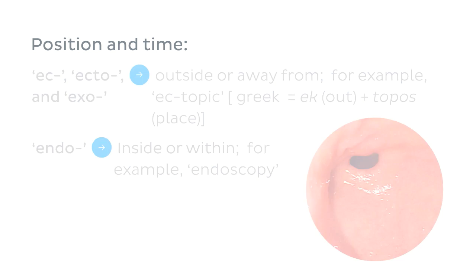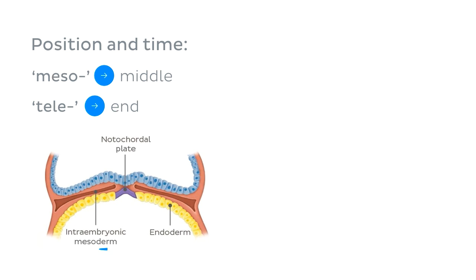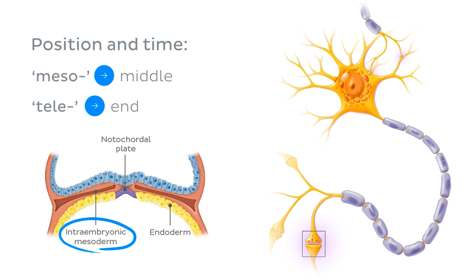Two last prefixes: 'meso,' meaning middle, and 'tele,' referring to the end of something or something distant. For example, mesoderm is an embryonic cell layer found between the ectoderm and endoderm layers, while a teleneuron is another name for a nerve ending found distant from the cell body.